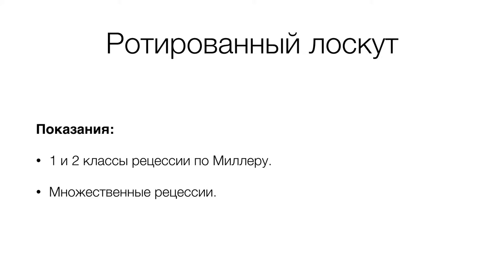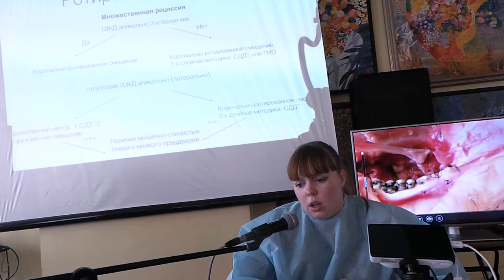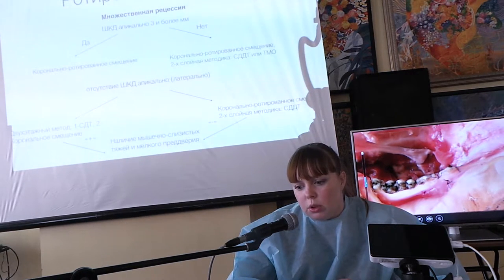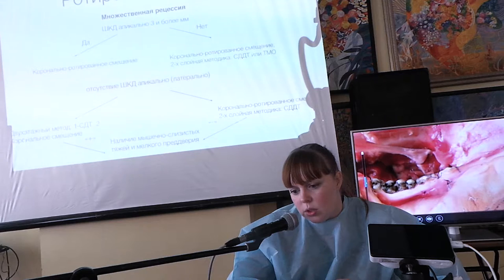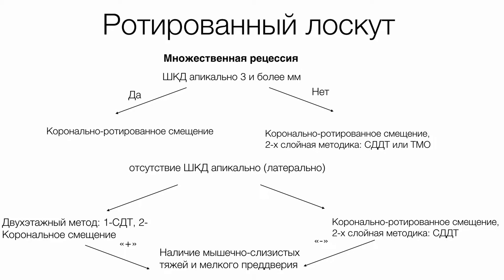Показания для ротированного лоскута — это первый и второй класс рецессий по Миллеру и, естественно, наличие множественных рецессий. На основании схемы, разработанной профессором Зукееви, представлена выжимка из его трудов по выбору методики для устранения множественных рецессий: когда используется однослойная методика, а когда двухслойная.